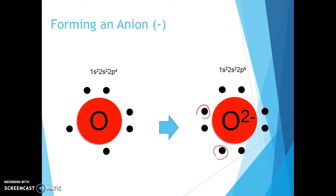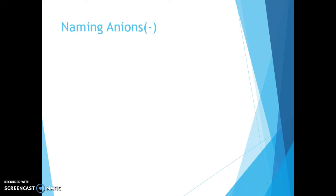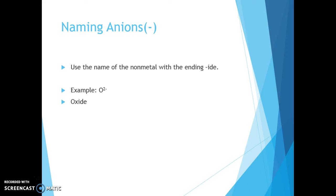When an anion forms, it gains electrons from a source and becomes complete. The cation we chose lost one electron, while oxygen had to gain two — so the number of electrons lost and gained makes a difference in everything we do. For naming the anion, we use the name of the nonmetal but end it in '-ide.' An elemental anion will always end in '-ide.' So O2- is not called oxygen — it's called the oxide ion.